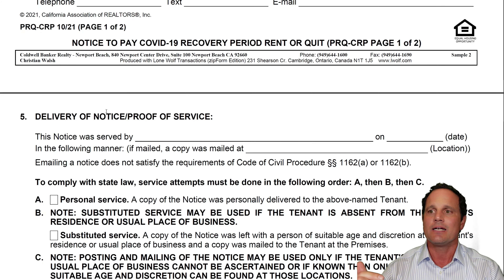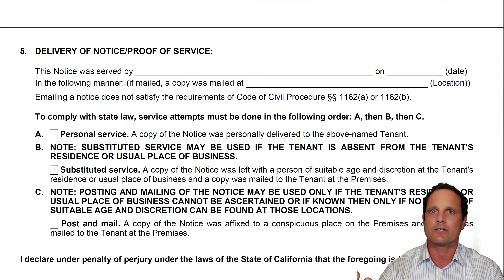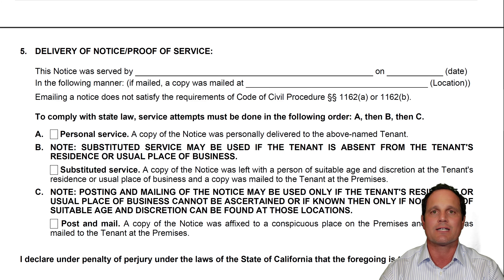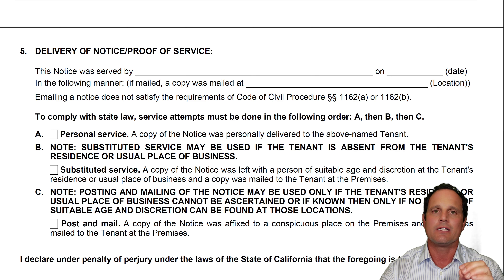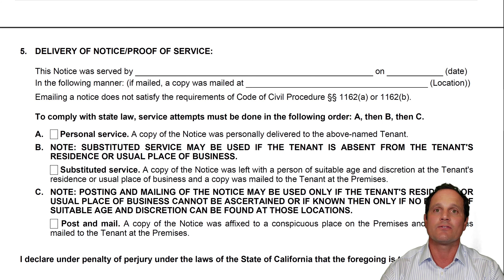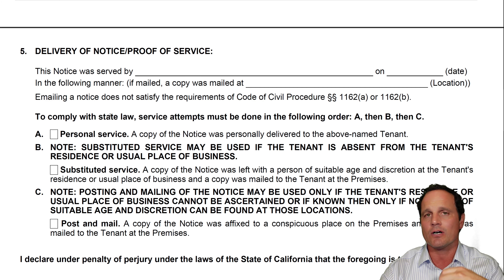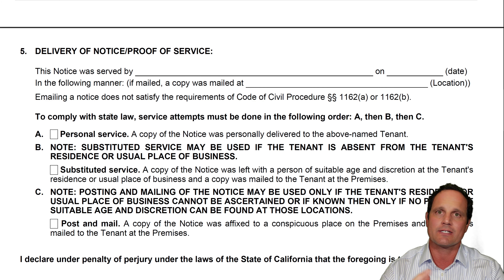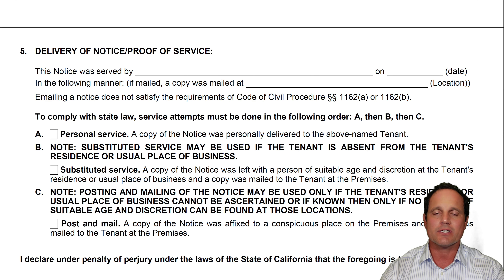The landlord is going to sign here. The delivery of a notice is almost as important as the actual notice and what's on it — they're both important. But delivery is very important to make sure it is a valid notice. The order for delivery is: first, personal service — that's where you knock on the door and hand it to the tenant or one of the tenants. Next would be substituted service — knock on the door, another person 18 years or older answers.